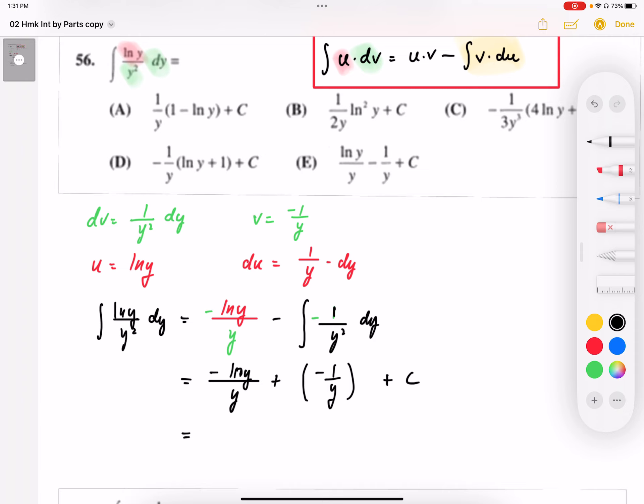I'm just going to rearrange this. So we're going to end up with—I can factor out a negative one over y—I end up with log y plus one plus C. And when I take a look at the expressions, my answer is going to be D.